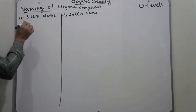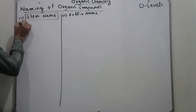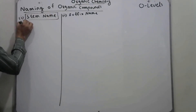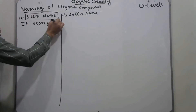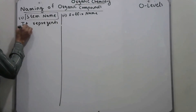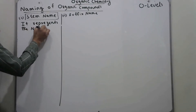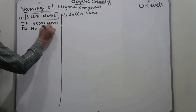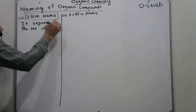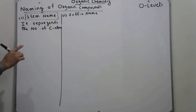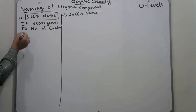The stem name depends upon the number of carbon atoms — it represents the number of carbon atoms present in the organic compound. This is also named as the parent chain.